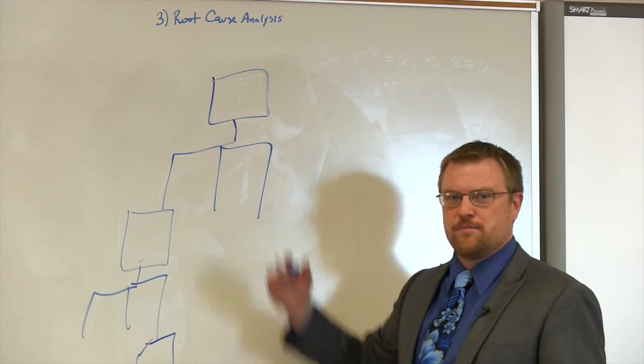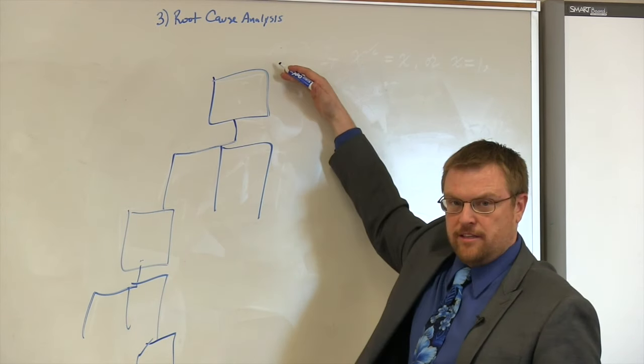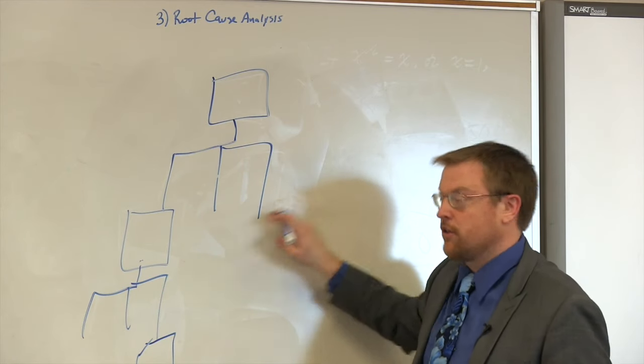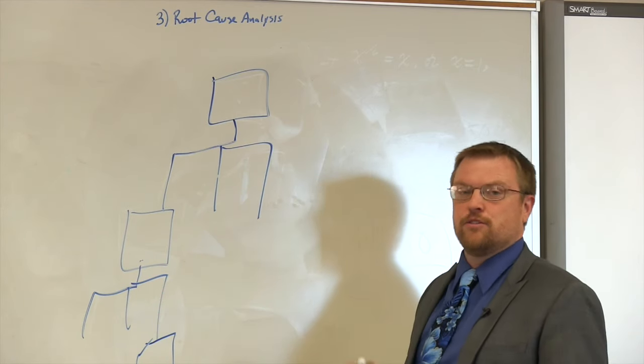And we call this the five whys because you're going down. Why did this initial problem occur? Because of these things. Why did each of these things occur? Because of the next level down. So it's the five whys.